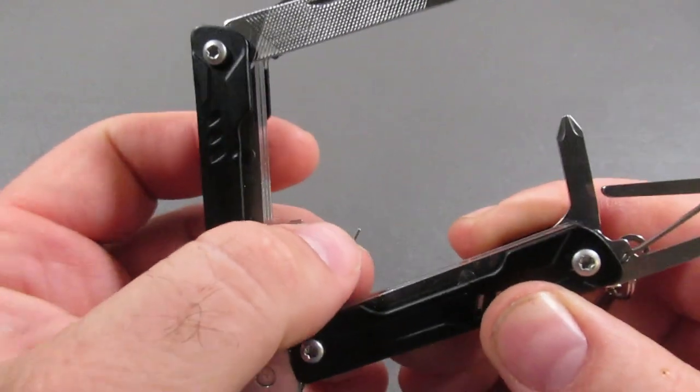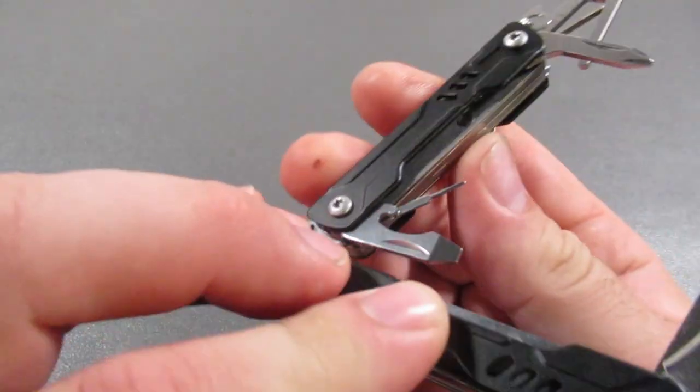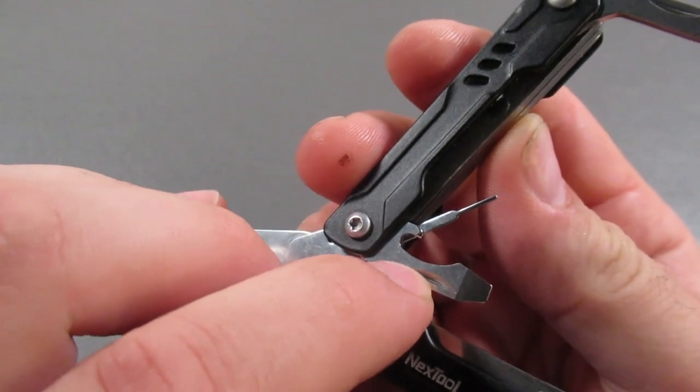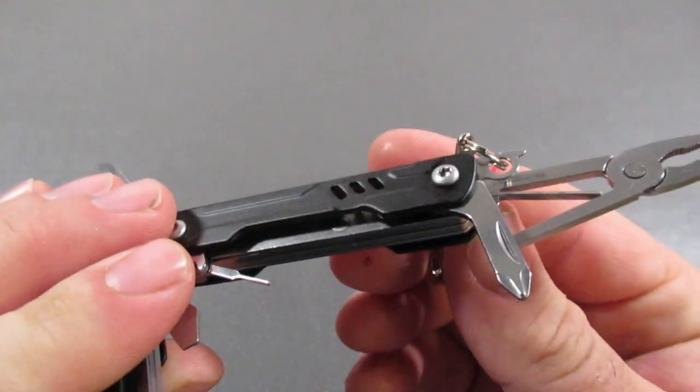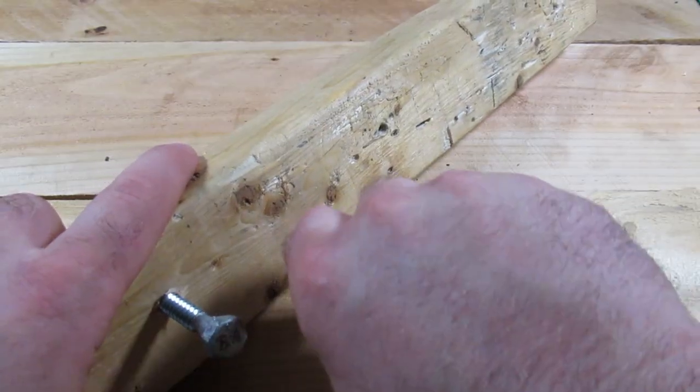You also have a SIM card ejector. This tool right here is the bottle cap lifter and a small screwdriver. You have a fairly okay Phillips screwdriver for the size.